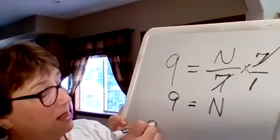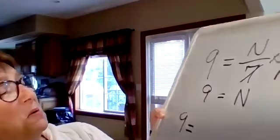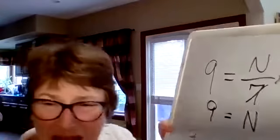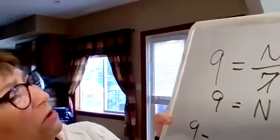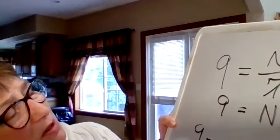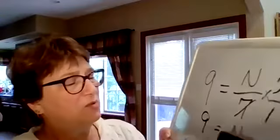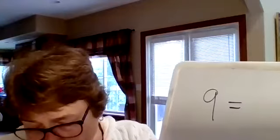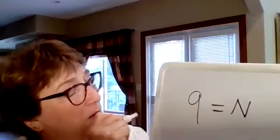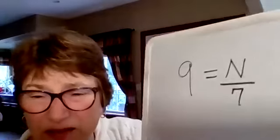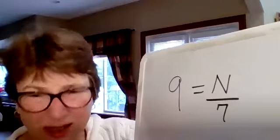We could cross off the two 7s and that leaves us with the n on this side and the 9 on there. Let's check it. 9 equals... Is it 9? Is that right? It doesn't look right. Something's wrong. Some number divided by 7. Let's try it again. Let's see if we can do better this time.